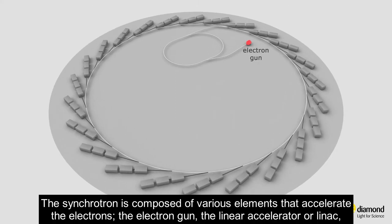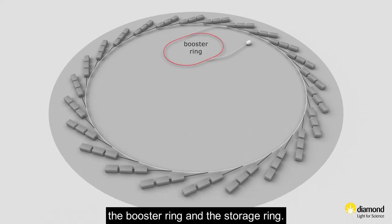The synchrotron is composed of various elements that accelerate the electrons: the electron gun, the linear accelerator or LINAC, the booster ring, and the storage ring.